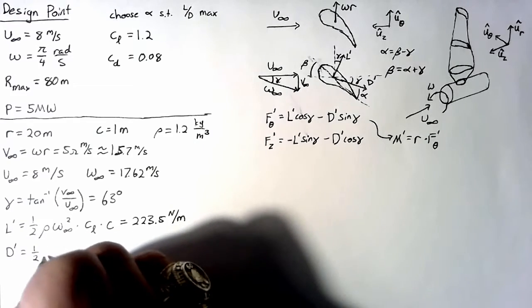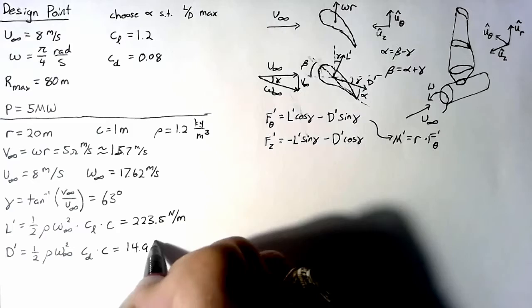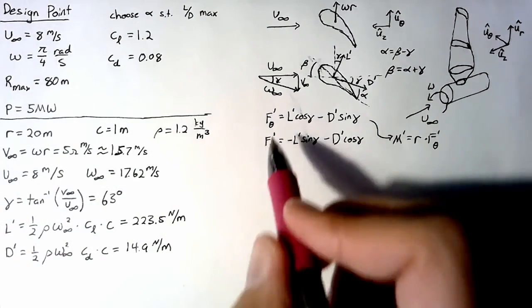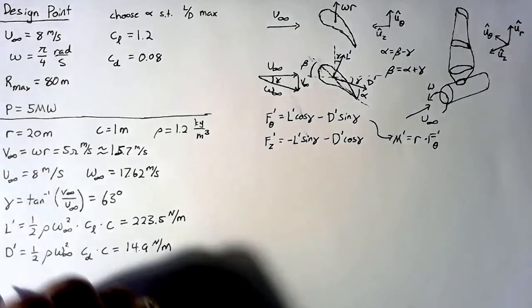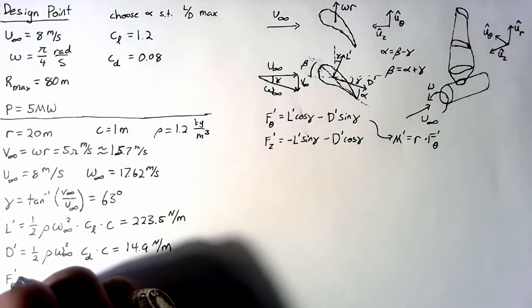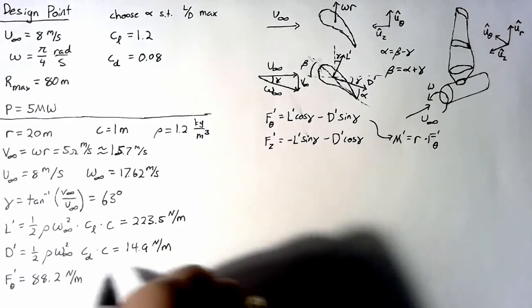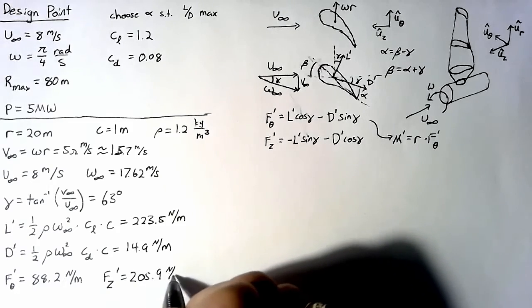We can do the same thing with drag, and we end up with 14.9 newtons per meter. Now that we have lift and drag, we can plug this into our F theta and Fz equations. For F theta, we end up with 88.2 newtons per meter, and for Fz, we end up with 205.9 newtons per meter.